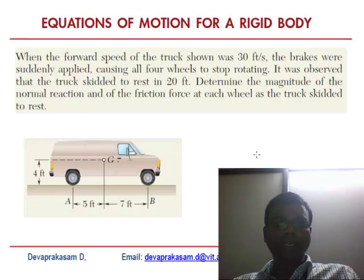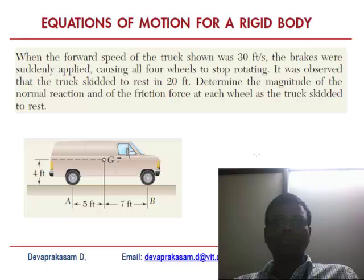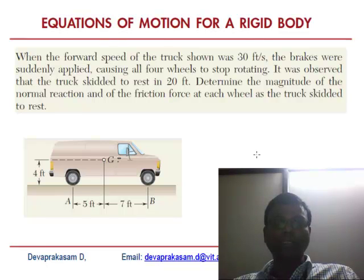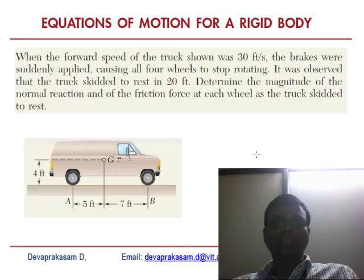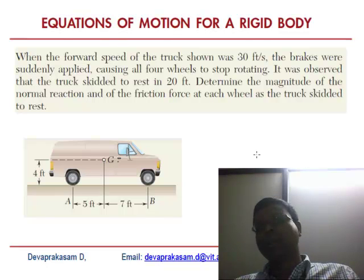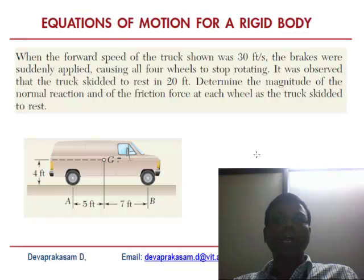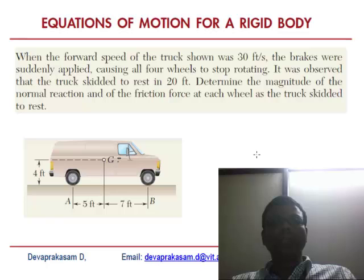Let us look into the first simple problem — the equation of motion for a rigid body. When the forward speed of a truck as shown was 30 feet per second, the brakes are suddenly applied causing all four wheels to stop rotating. The truck skids — because of that sudden brake, there is still momentum causing skidding. The truck skidded to rest over 20 feet. The question is: determine the magnitude of the normal reaction and the friction force at each wheel as the truck skidded to rest. Kinetic friction is involved along with a normal force.